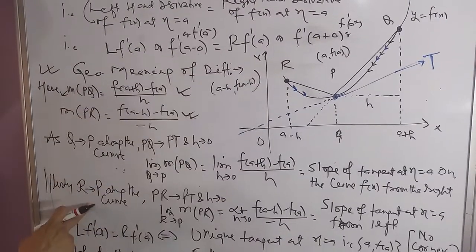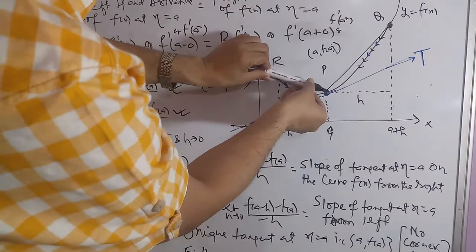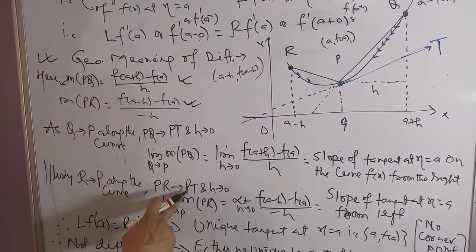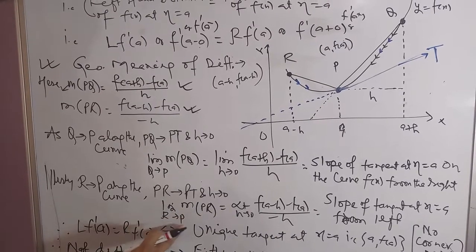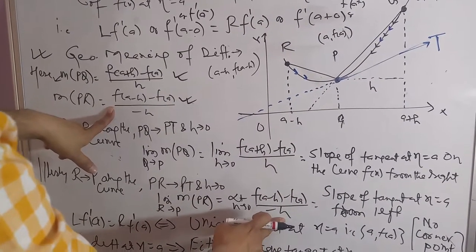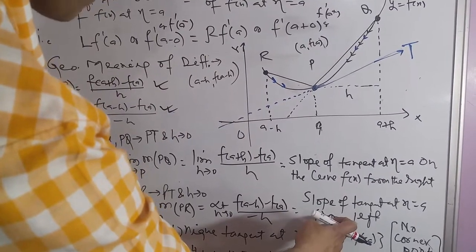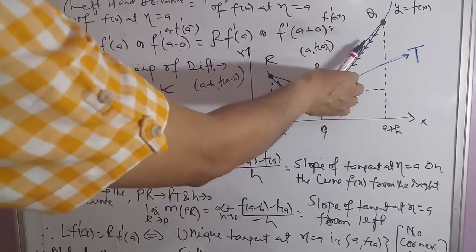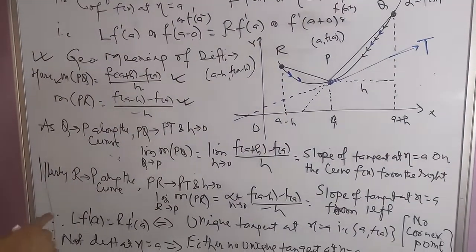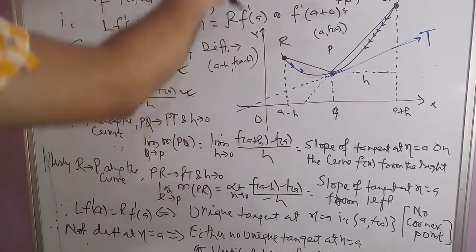Similarly, as R tends to P along the curve, the chord PR tends to the tangent PT. The limit of the slope of PR as R tends to P equals limit h tends to 0 of [f(a minus h) minus f(a)] upon [minus h], which is the slope of the tangent at x equal to a from the left. So the right-hand derivative and left-hand derivative represent slopes of the tangent from right and left respectively.